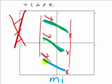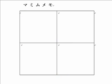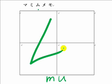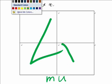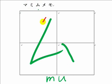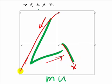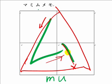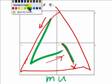Ichi ni san, mi. Next is mu. From here, ichi ni. Go down then continue up, then stop. It looks like a triangle shape. One more.